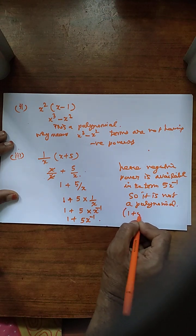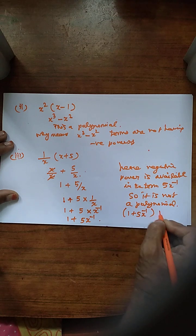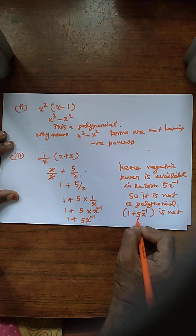In bracket, 1 plus 5x to the power minus 1 is not a polynomial.